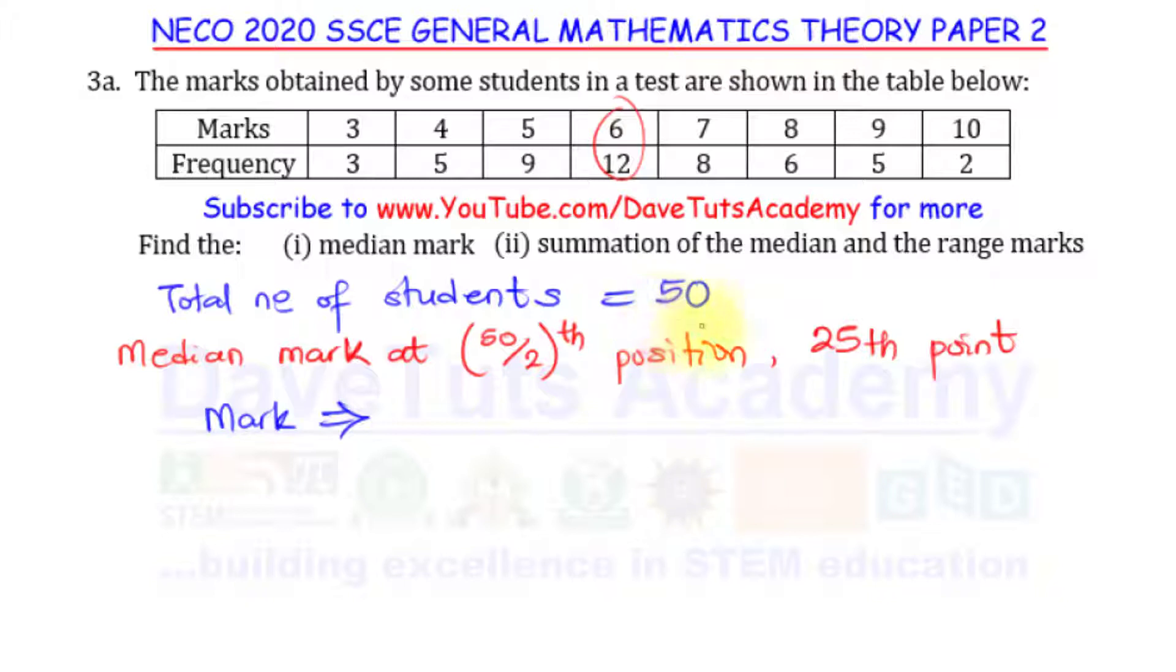That mark is at this location. Ideally we have the total number of students as 50, meaning the total is even, and for us to find the median we actually take the 25th and the 26th position. So it is 6 at the 25th plus 6 at the 26th position, all divided by 2.